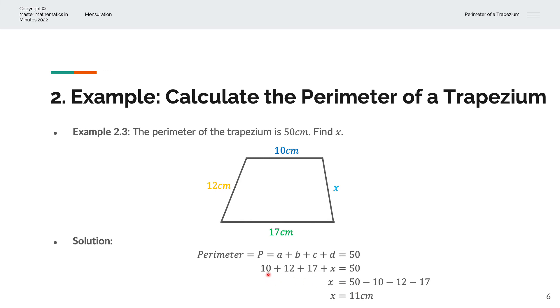And we'll bring over the first three terms to the right-hand side. And that becomes minus 10, minus 12, minus 17. And that simplifies, X is equal to 11 centimeters.